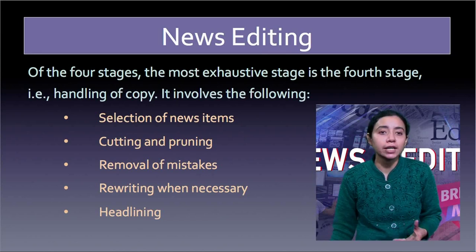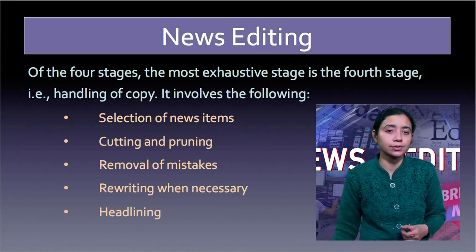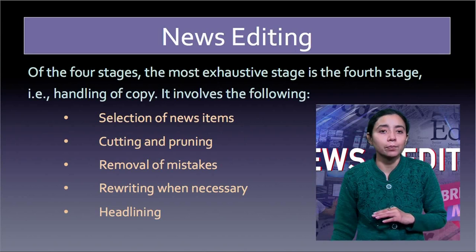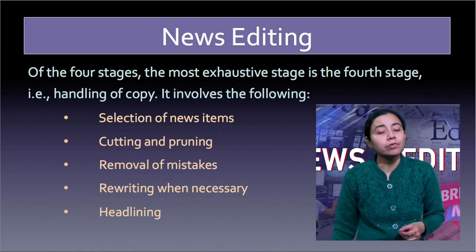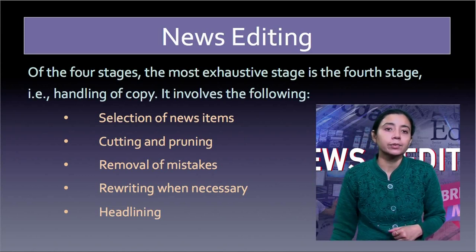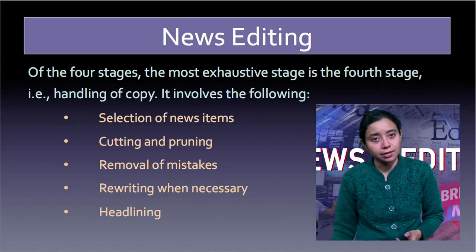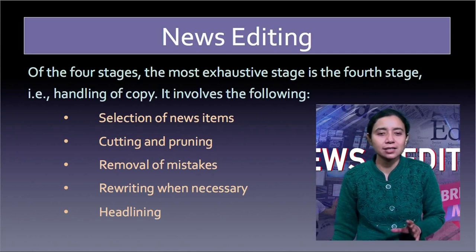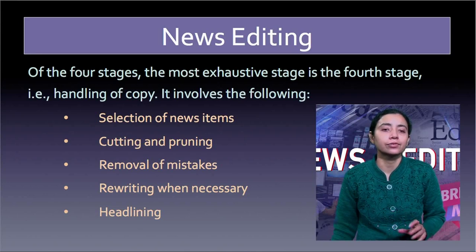The handling of the copy stage involves some other important parts. For instance, we have the selection of news items, where the important news items will be selected. Then there is cutting and pruning — the important ones will be taken, but the less important ones will be left out. Then removal of mistakes — grammatical errors and errors in the use of language will be looked after. Then there will be rewriting when necessary, if the language needs to be modified. And finally there is headlining.